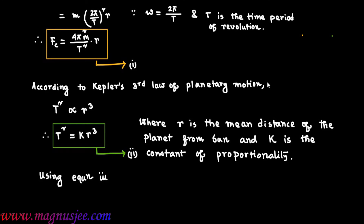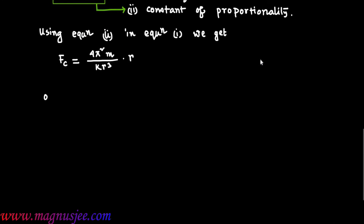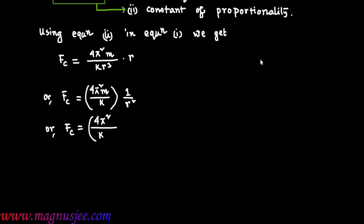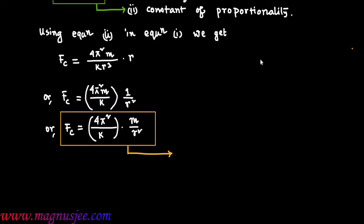Using equation 2 in equation 1, we substitute T² = kr³ into FC = 4π²m·r/T², giving FC = 4π²m divided by k times r², or FC = (4π²/k) · (m/r²). This is equation 3.